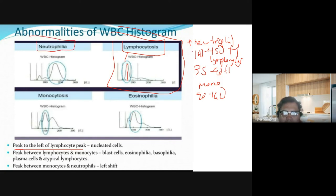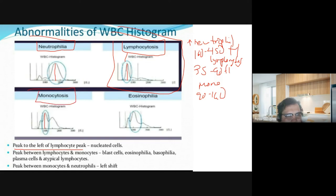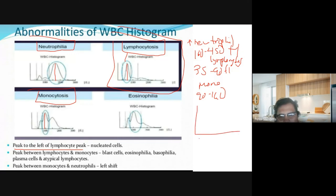For neutrophilia, the range is 160 to 450 femtoliters — you fall within the range of the size of neutrophils, meaning you have neutrophilia. For monocytosis, the range is 90 to 160 femtoliters. Just remember the sizes of WBCs: neutrophils 160 to 450 femtoliters; then look at where the curve peaks — that tells you whether it is neutrophilia, lymphocytosis, or monocytosis.